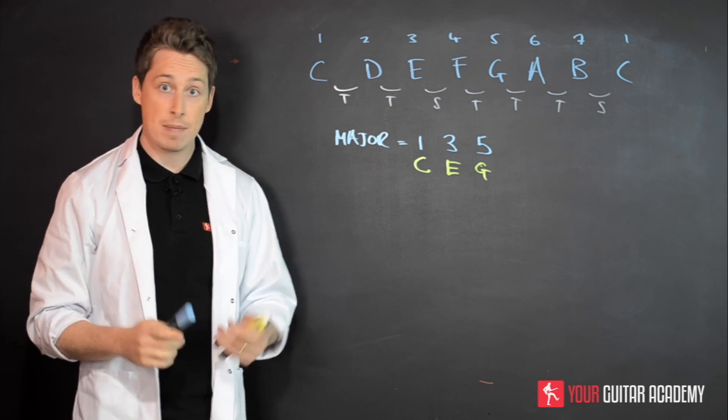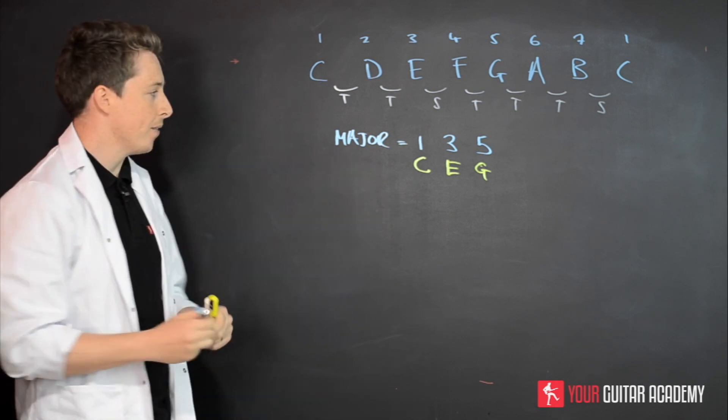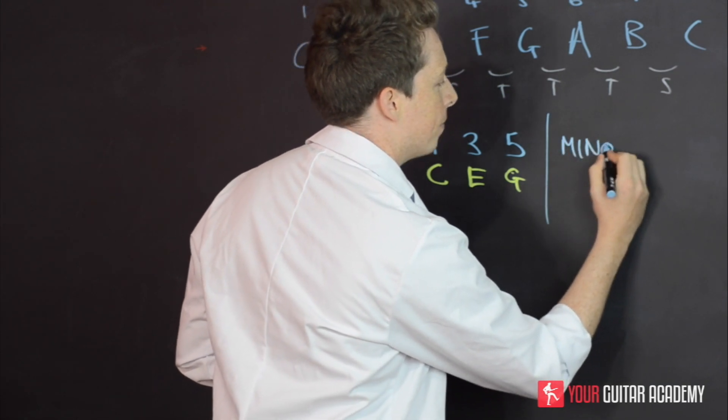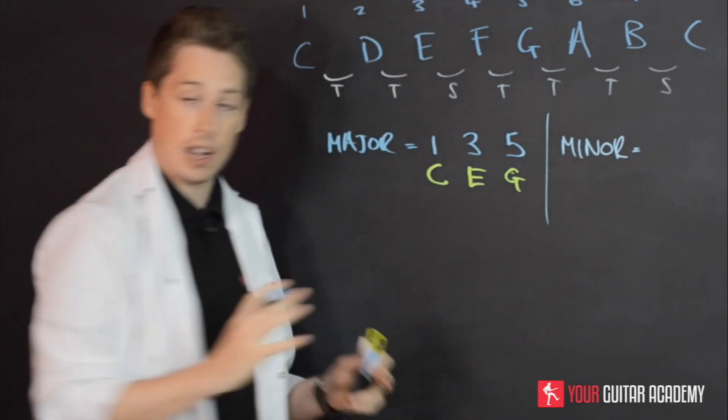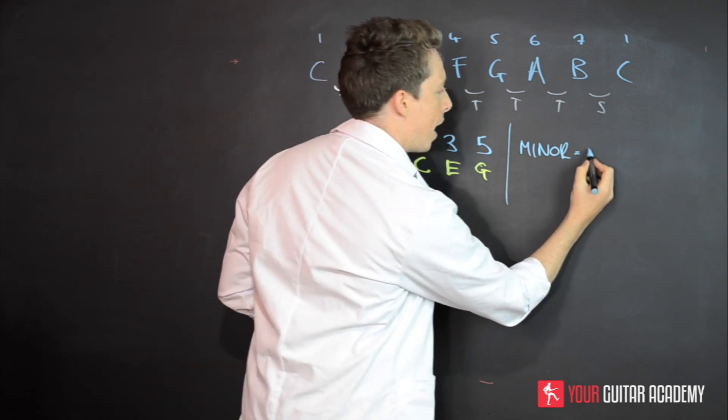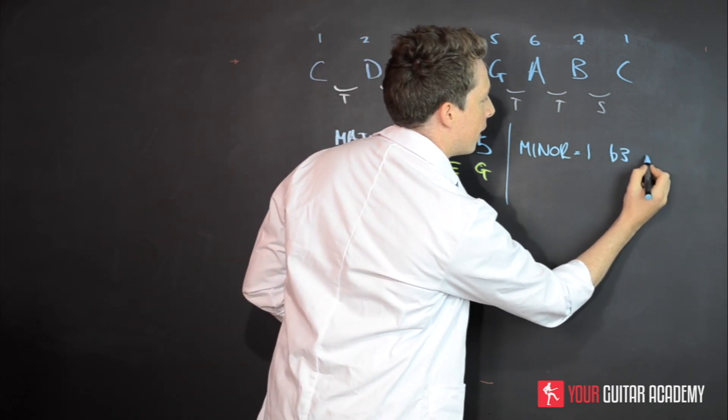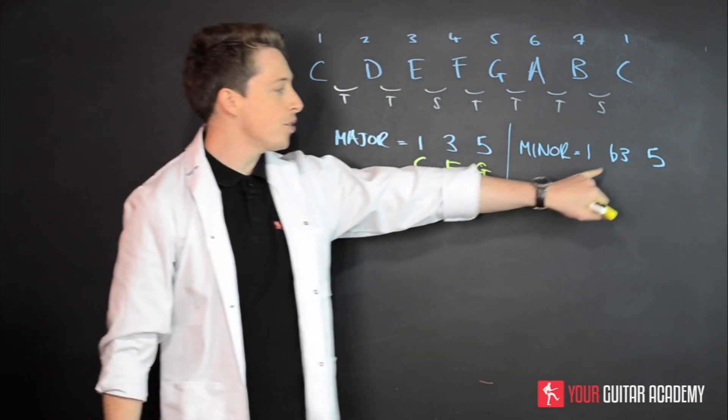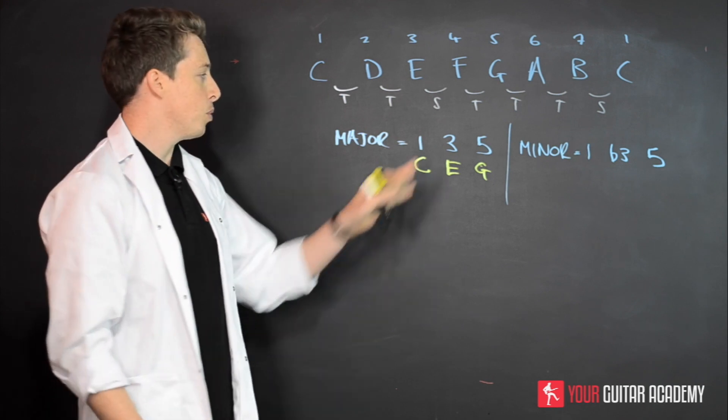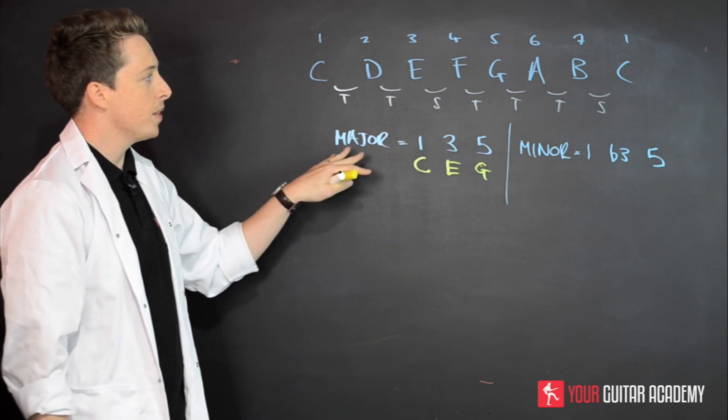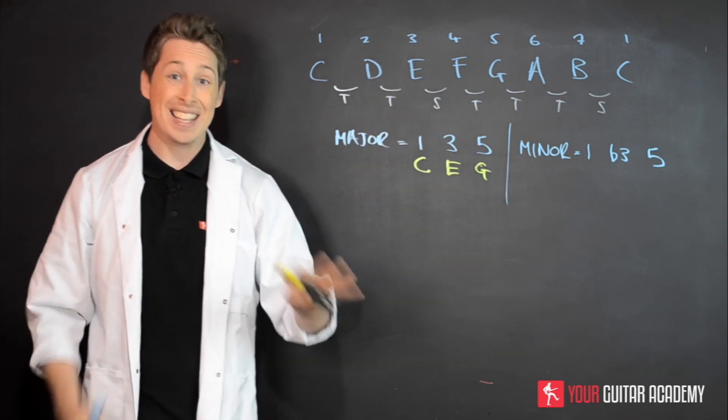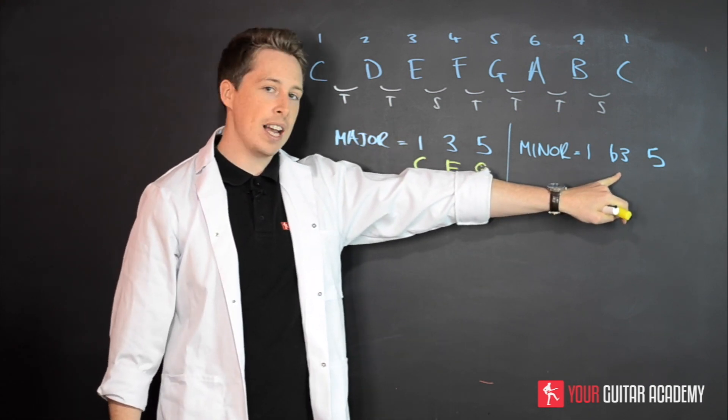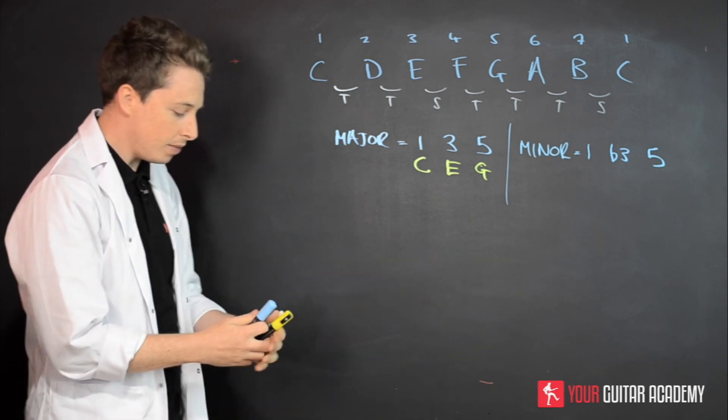So hopefully that's kind of familiar to you. Let's just do minor. So minor formula is one, flat three, and five. This flat third is the big difference between the minor and the major, and as we go further and deeper into chord construction, that's going to be crucial because this is going to really define the sound of the minor.